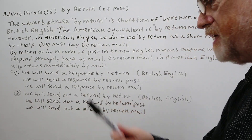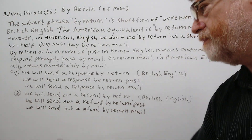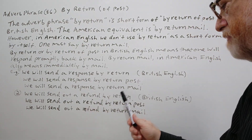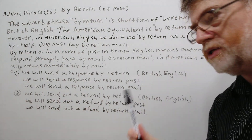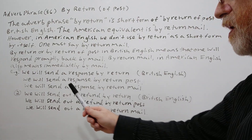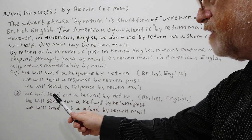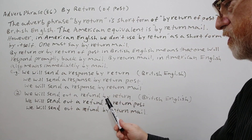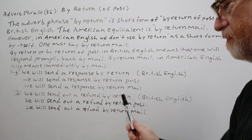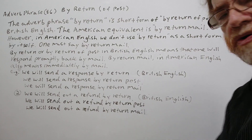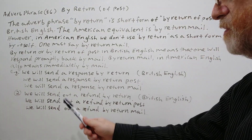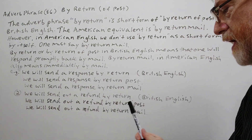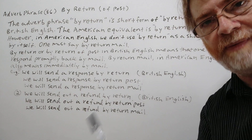Here's a second example. In British English: 'We will send out a refund by return,' or the full form: 'We will send out a refund by return of post.' In American English: 'We will send out a refund by return mail.'